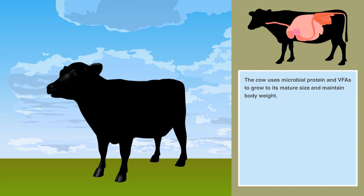The cow uses microbial protein and VFAs to grow to its mature size and maintain body weight.